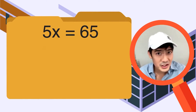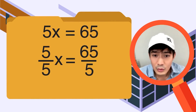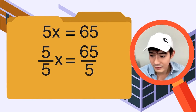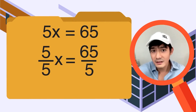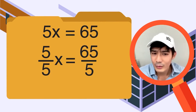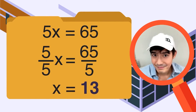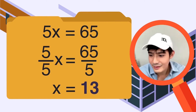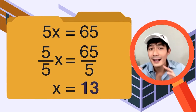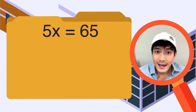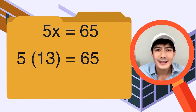Kailangan natin gawing 1 yung coefficient ng x kasi kailangan natin i-isolate siya — kailangan mag-isa lang si x. We can do this by doing the inverse operation of the equation. Dahil multiplication ito, will do its inverse operation which is division. So 5x divided by 5 is equal to 1x, or simply x. 65 divided by 5 — what do we get? 65 divided by 5 is 13. 1 times x is equal to 13, so x is equal to 13.